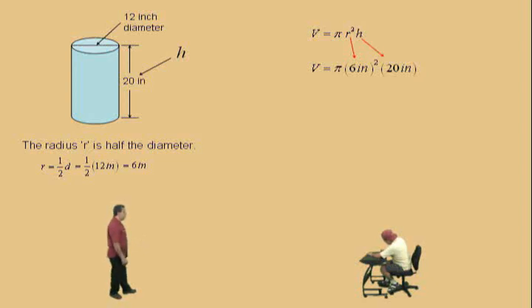And now, remember, order of operations says we've got to do the exponent first. So, Charlie, what's 6 squared? 36 inches. That's our 36, but notice it's 36 inches squared. And now, notice here, we have to do 36 inches squared times 20 inches, right?